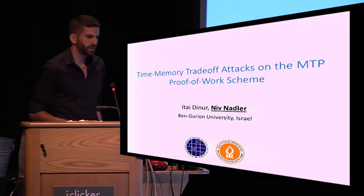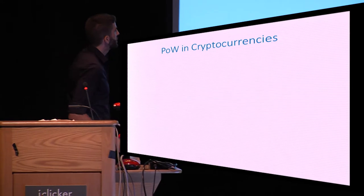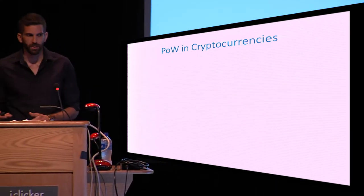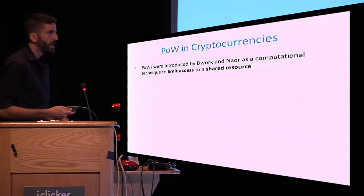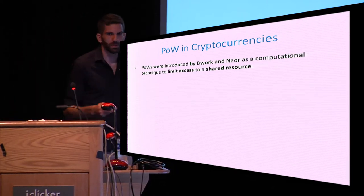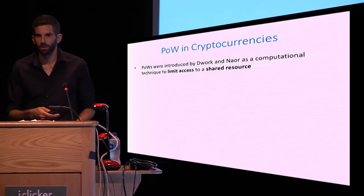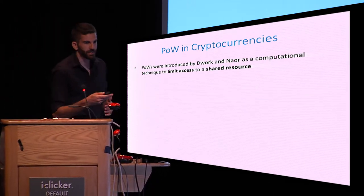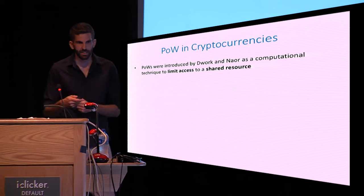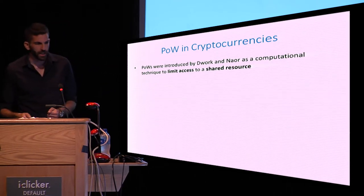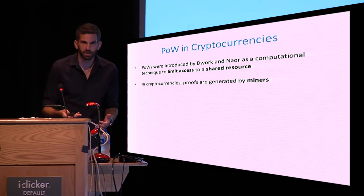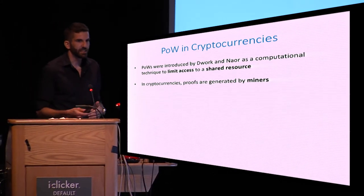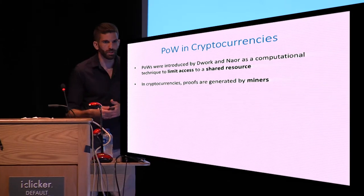Thank you for the introduction. I'm going to talk about proof-of-work in the context of cryptocurrencies. The term proof-of-work was first introduced by Dwork and Naor in the early 90s as a computational technique to limit excessive users' access to a shared resource. It's a very general concept, and in the context of cryptocurrencies, the entities that generate those proofs are called miners.